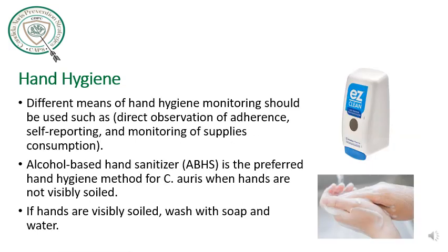For monitoring hand hygiene compliance, different methods should be used: direct observation, self-reporting, and supply consumption. The alcohol-based hand sanitizer is the preferred hand hygiene method for Candida auris, unless the hands are visibly soiled, in which case washing with soap and water should be performed.